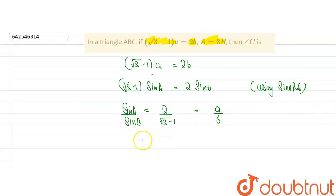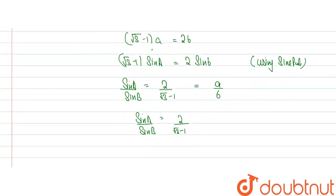So we can say that sin A by sin B is equal to 2 divided by root 3 minus 1. Now, by dividing by 2 root 2 upward and downward, we will get sin A by sin B